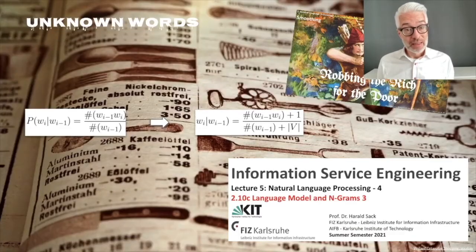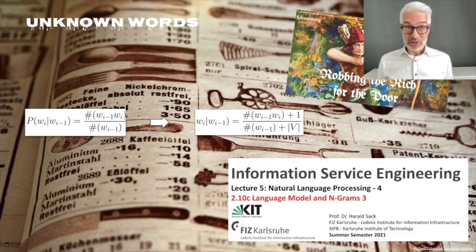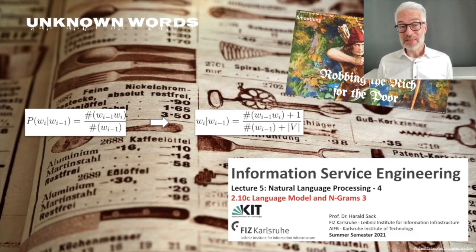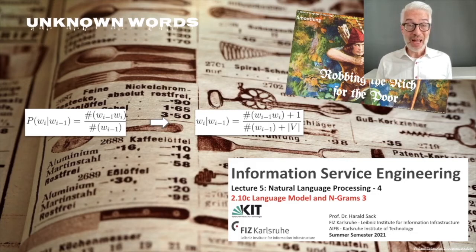What we are going to do next is address the problem that not all words may occur in our corpus — so-called unknown words for which we don't have a probability. Moreover, not all potentially possible n-grams occur in our corpus, so looking for a specific bigram, trigram, or fourgram may yield zero occurrences. If the probability is zero, your entire computation breaks down because everything boils down to zero. We have to find a way to estimate probabilities for these unknown words or unknown sequences.